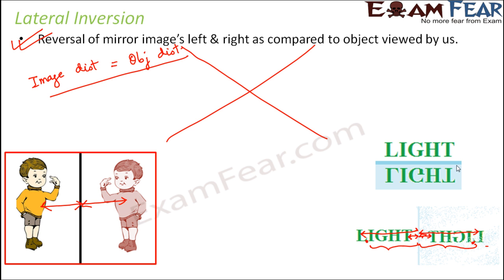Consider another example: if 'LIGHT' is written on a board but the mirror is placed at a different position, the image looks different from before, because the distances are now measured from a different direction. So the placement of the plane mirror determines exactly how the image will appear.